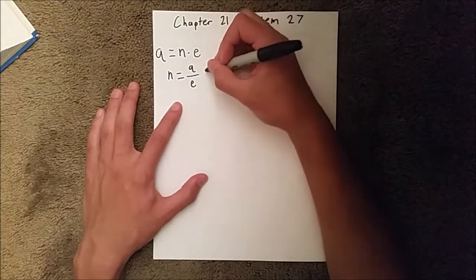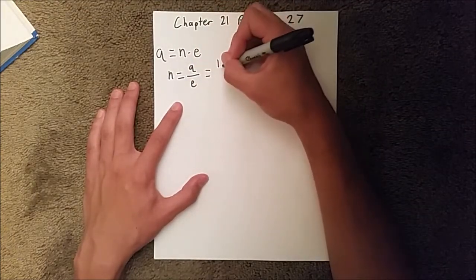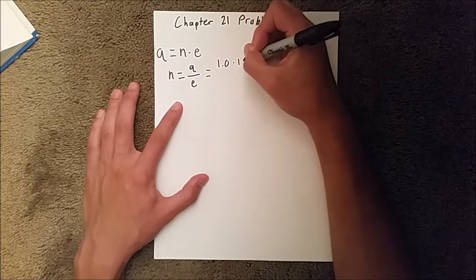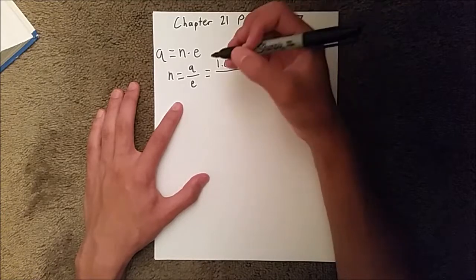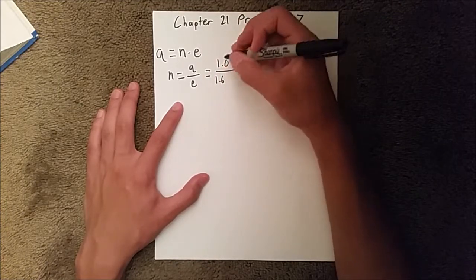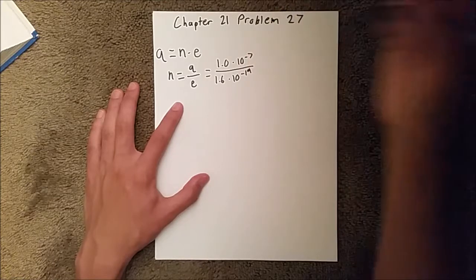That leaves us with n equals q over e, and the charge we are given is 1.0 times 10 to the negative 7th, and our elementary charge constant is 1.6 times 10 to the negative 19th.